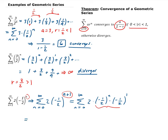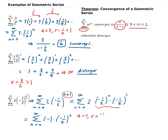From there, we have the summation from 0 to infinity of 2 times negative 1 half, times negative 1 half to the nth power. So a is negative 1 and r is negative 1 half.